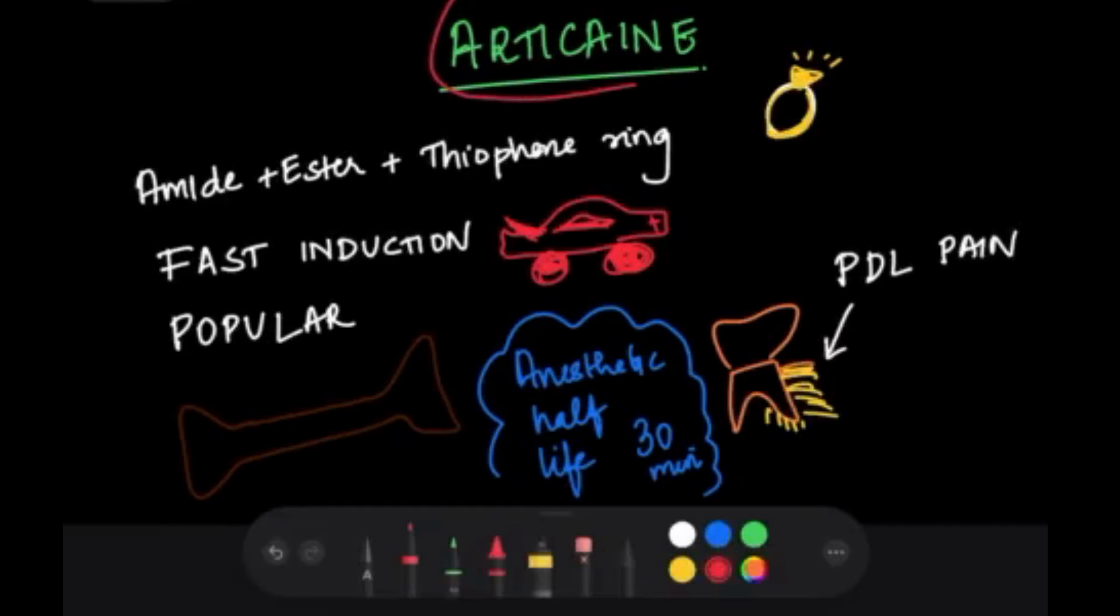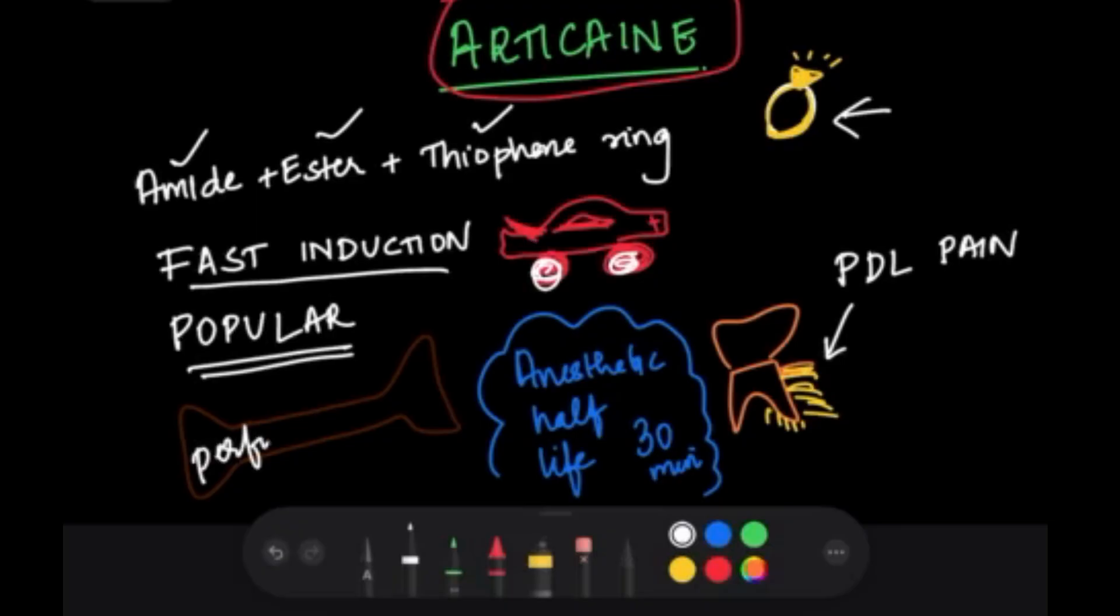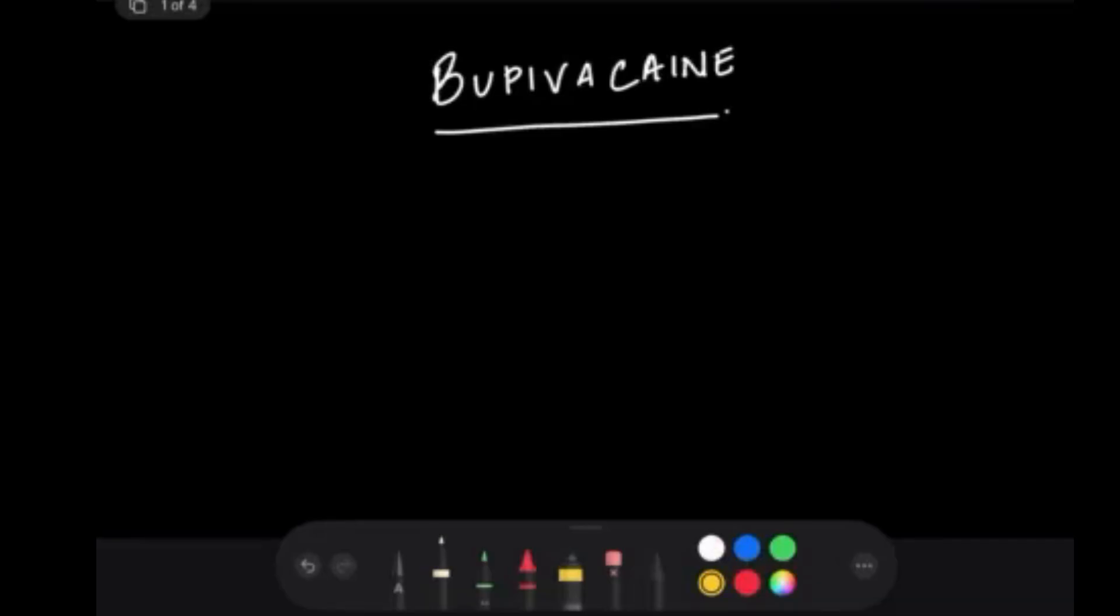Next is articaine. Articaine is the only drug which has an amide, ester, and a thiophene ring. This can be an MCQ question. I've drawn a ring here so you can remember it. Articaine is a fast inducer, and it's becoming more and more popular. I've drawn a racing car here—racing cars are fast and popular. Articaine perfuses through bone. The anesthetic half-life is 30 minutes, and it's also used for periodontal ligament pain.